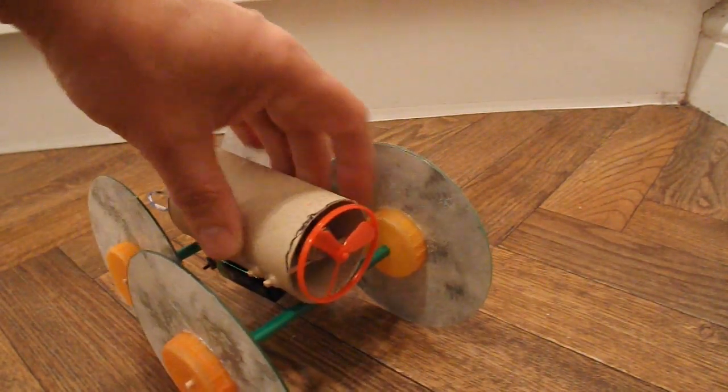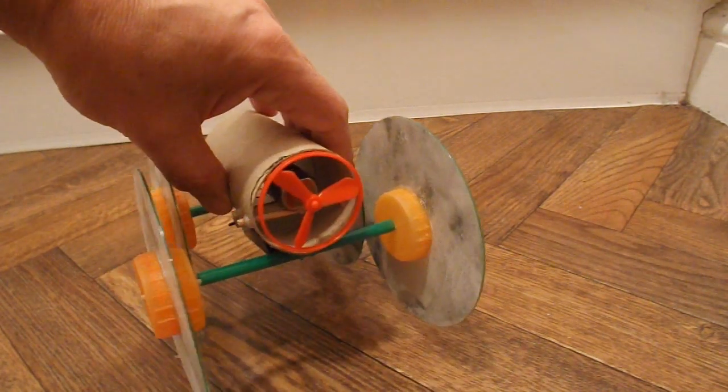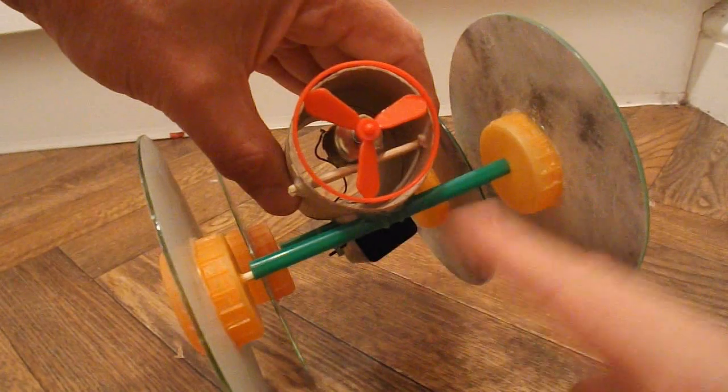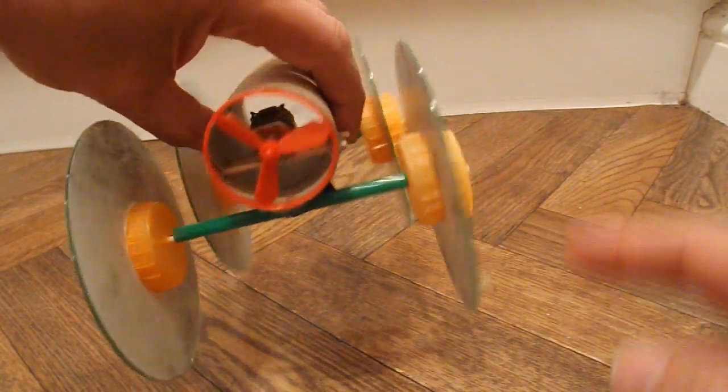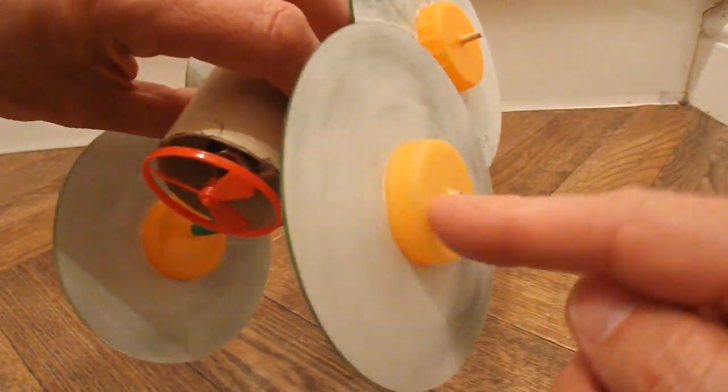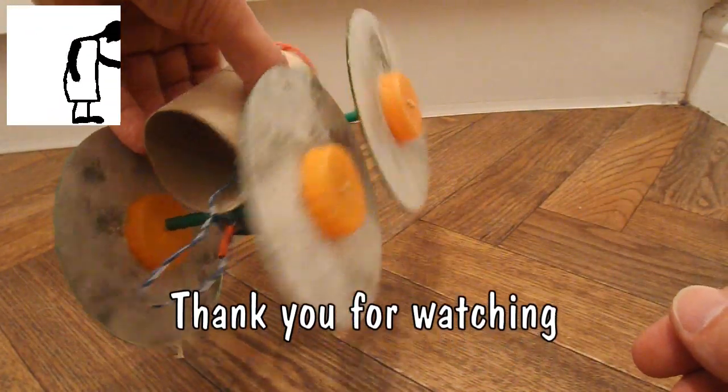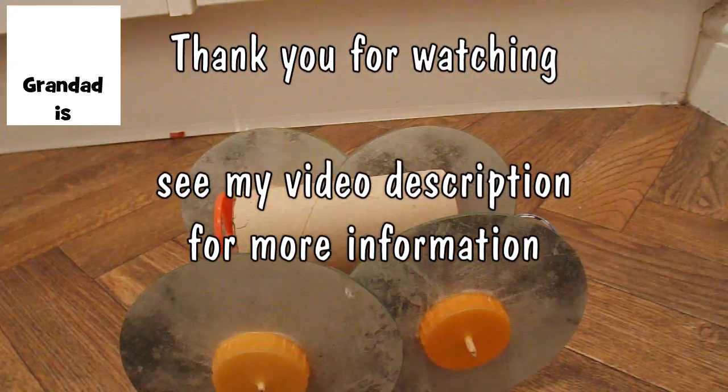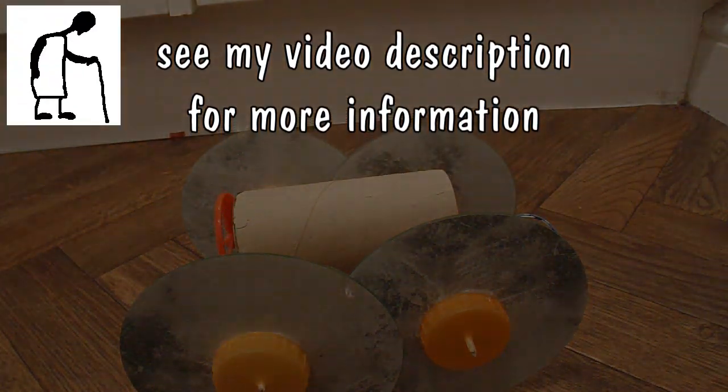The wheels are all CDs. Barbecue skewer axles. Drinking straws for the tubes. Milk bottle tops for the hubs. And that's it. Only took a few minutes to make. Job done.